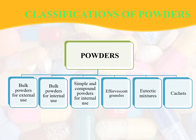Coming to the classification of powders: powders are categorized into six types — bulk powders for external use, simple and compound powders for internal use, effervescent granules, eutectic mixtures, and cachets.